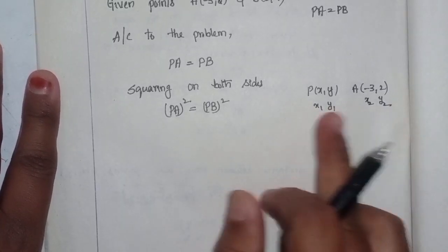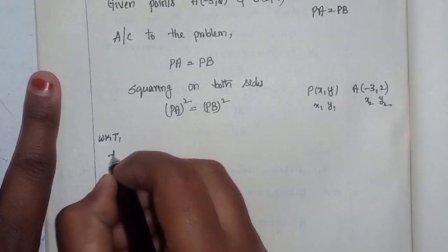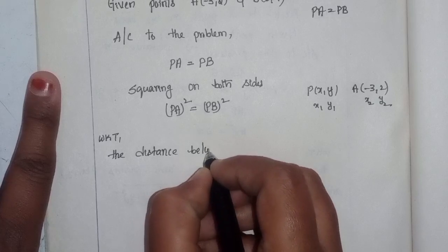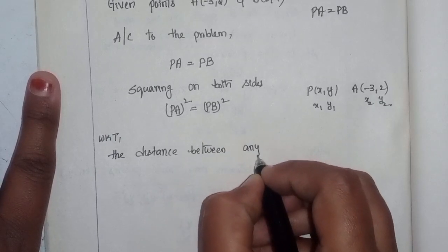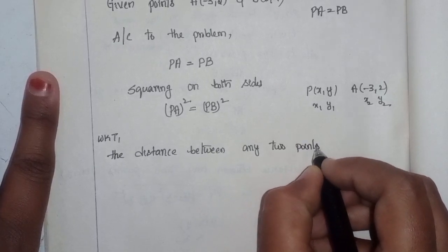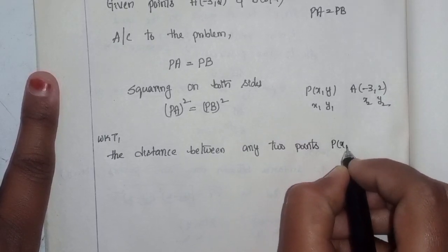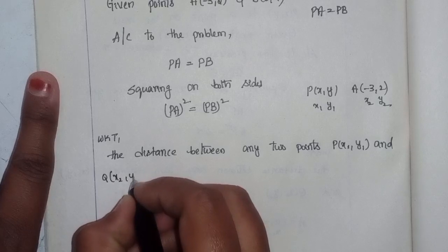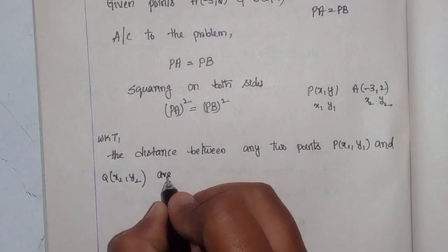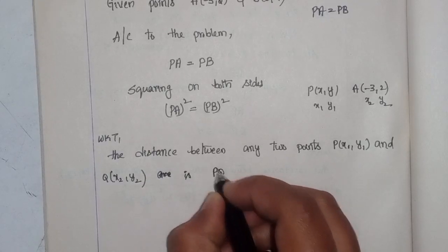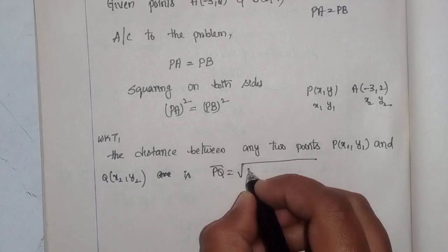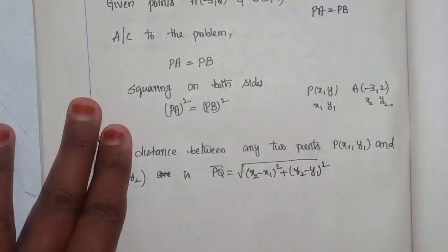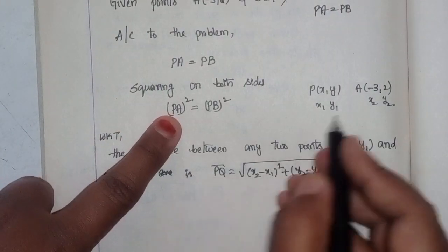The distance between these two points — we know that the distance between any two points P(x₁, y₁) and Q(x₂, y₂) is PQ equals the square root of (x₂ - x₁)² plus (y₂ - y₁)². So we apply this formula to find PA and PB distances.